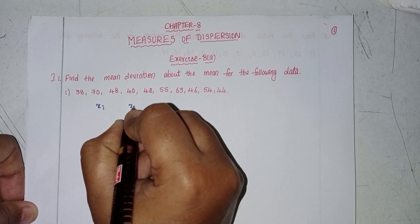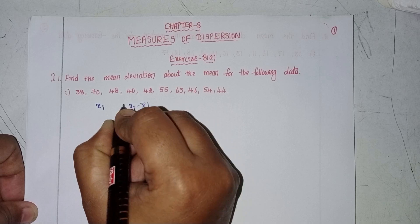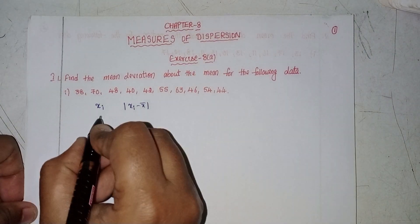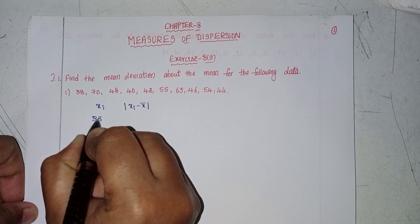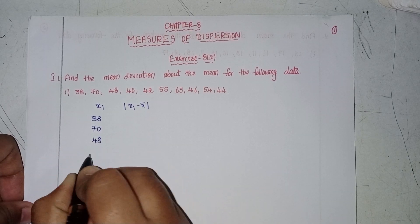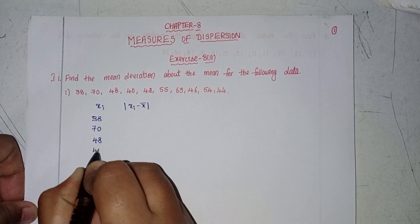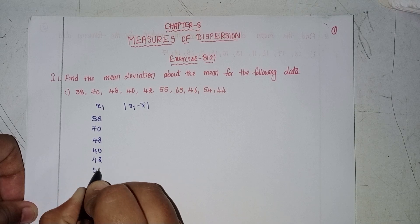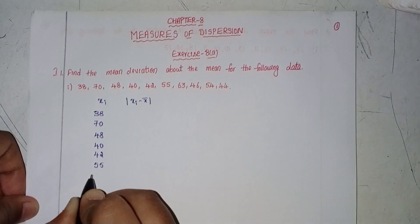Next, we compute |xi minus x̄|. The data values are: 38, 70, 48, 40, 42, 55, 63, 46, 54, 44.